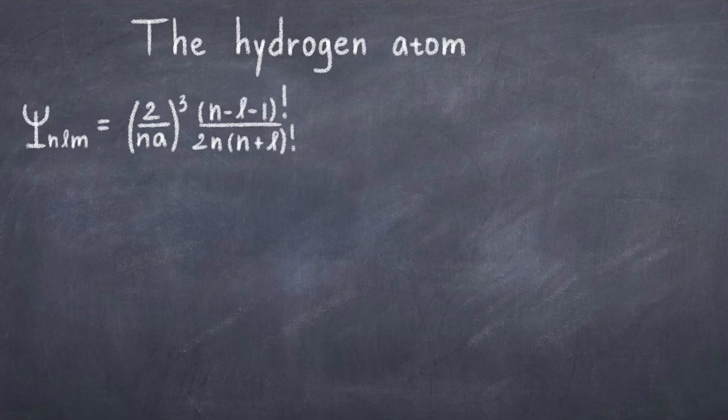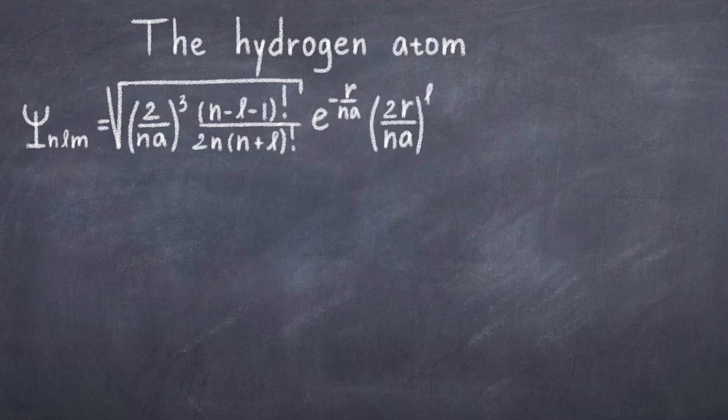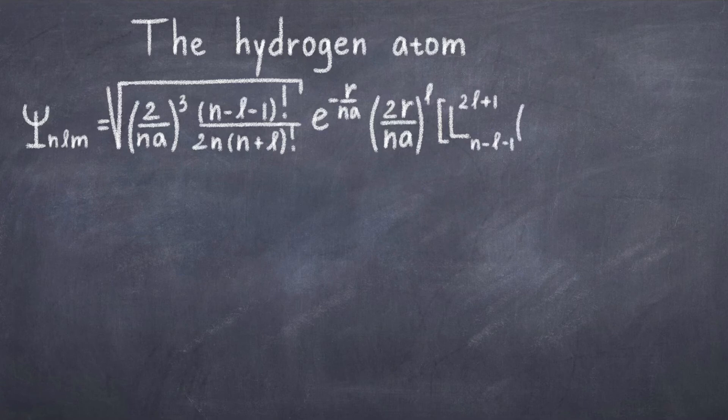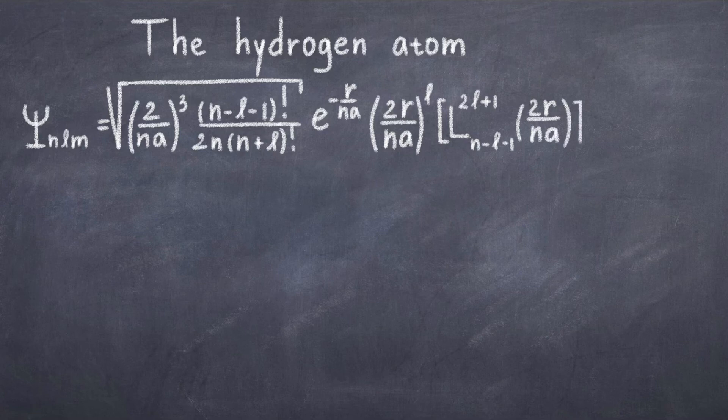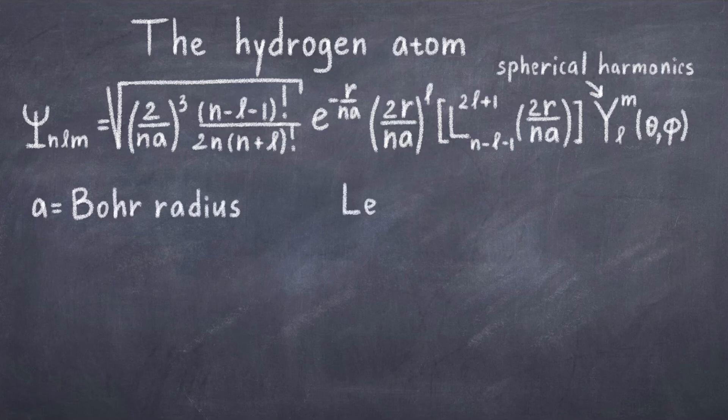As psi of n, l and m is equal to the square root of 2 divided by n a, and that part cubed times n minus l minus 1 factorial divided by 2n and in brackets n plus l factorial. And end of the square root times the exponential of minus r divided by n a, times 2r divided by n a to the power of l times the Laguerre polynomial of the quantum numbers n, l times the spherical harmonics. Where a is the Bohr radius, we can see that it also depends on the Laguerre polynomial and the spherical harmonics.